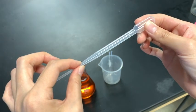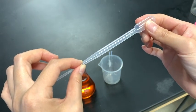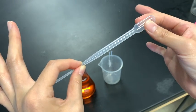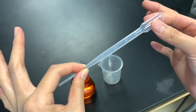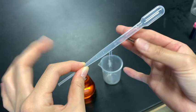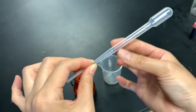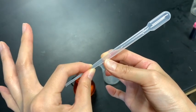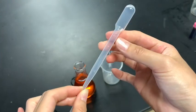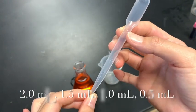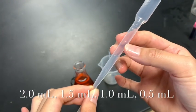In this video we're going to learn how to properly transfer solutions using a plastic transfer pipette. It is made up of a bulb connected to a shaft and all these markings on the transfer pipette allow you to measure different volumes of solution. The top mark is for 2 milliliters, the next one is 1.5 milliliters, the next one is 1 milliliter, and the last one is 0.5 milliliters.